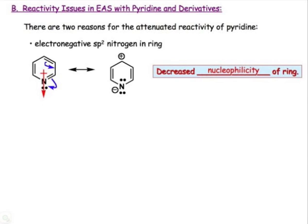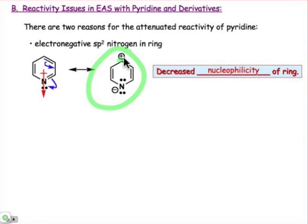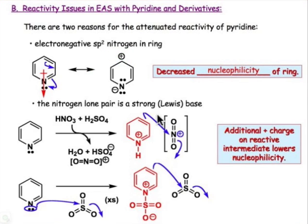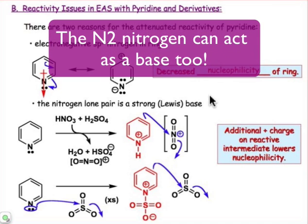There are two reasons for the deactivation. One is the electronegativity of the sp2 nitrogen atom. Recall that we had drawn some resonance descriptions in which the ring is positively charged. If the ring is positively charged, we get the sense that it's electron-deficient. An electron-deficient ring doesn't make for a very good nucleophile. In addition to the electronegativity of the ring, there is another mode of reactivity that will decrease the reactivity of the π system even further.